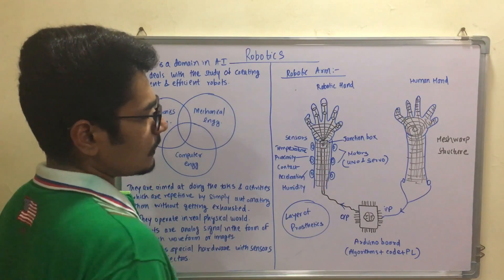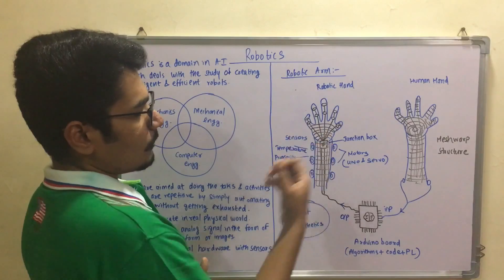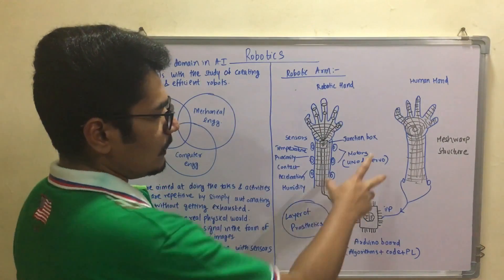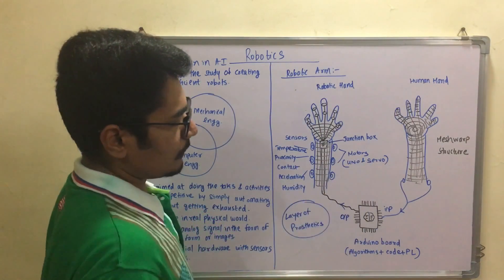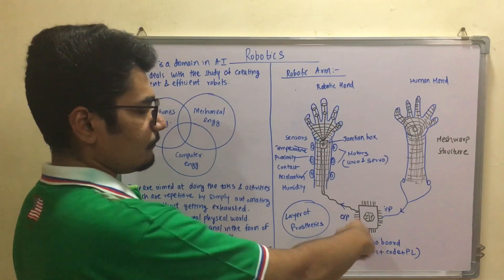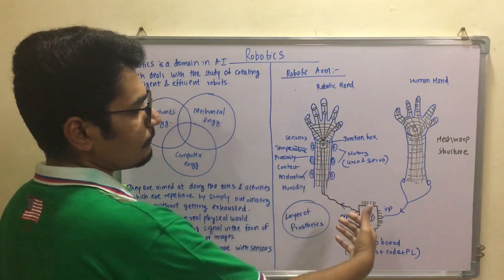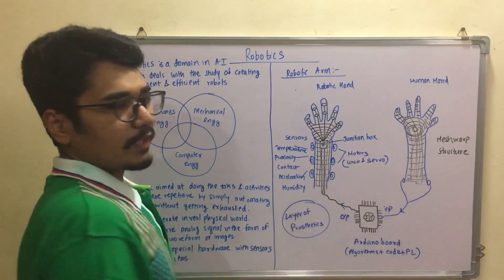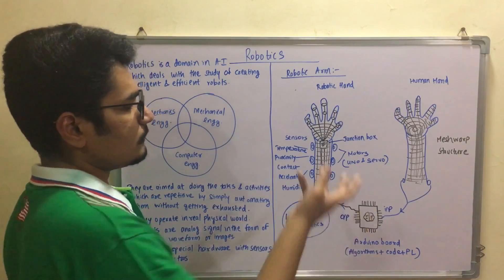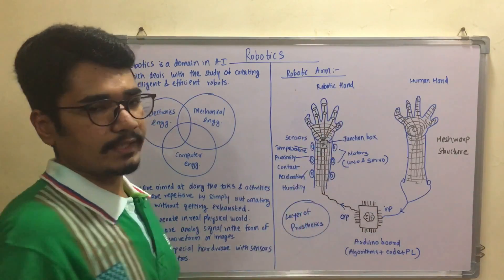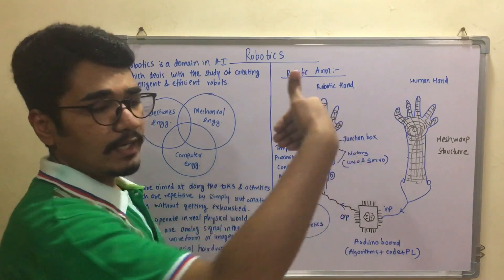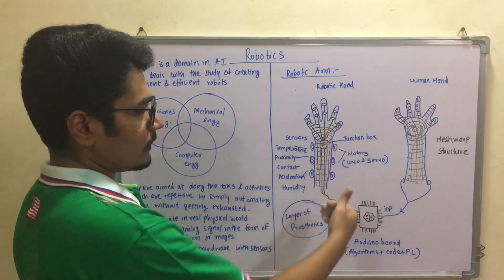These motors are used for performing the activities. For motors you have UNO motors and servo motors — these two motor types are used for Arduino boards. Different kinds of boards use different kinds of motors. These are the basic two motors used for creating the robotic arm, and you can have many more motors for constructing it.